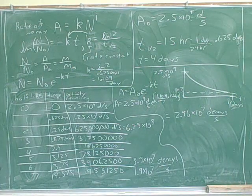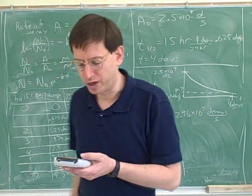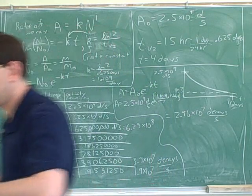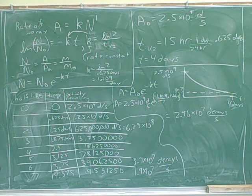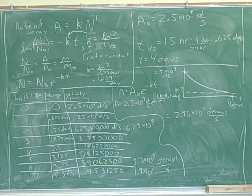Now let's see how to get out of scientific notation on your calculator. Hit the mode key, go to Normal, hit Enter, and then quit out of that.